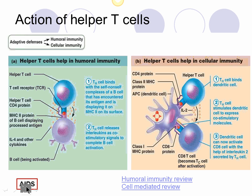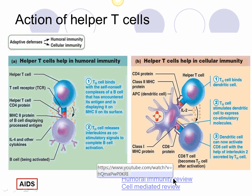In AIDS, it's the helper T-cells that are destroyed. Whenever someone has HIV infection, clinicians monitor the CD4 cell level. When CD4 levels keep falling, AIDS begins to manifest. So let's review humoral immunity and cell-mediated immunity.